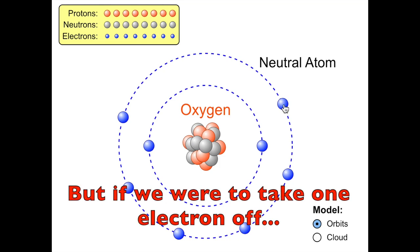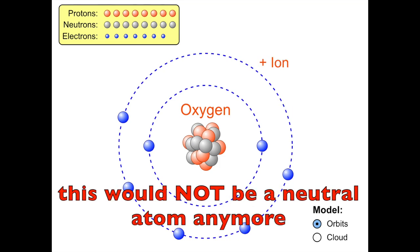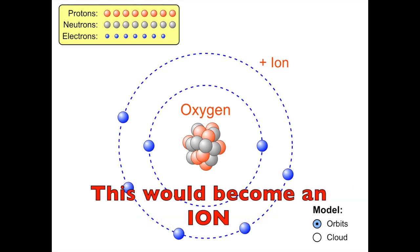But if we were to take one electron off, this would not be a neutral atom anymore. This would become an ion.